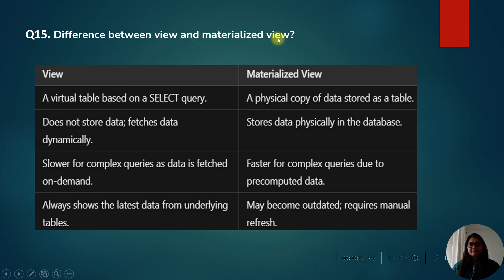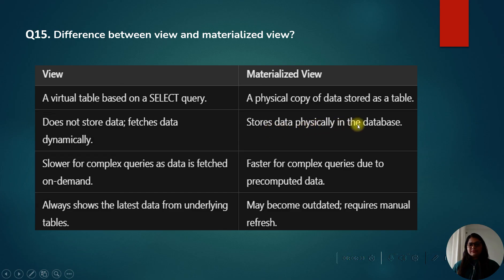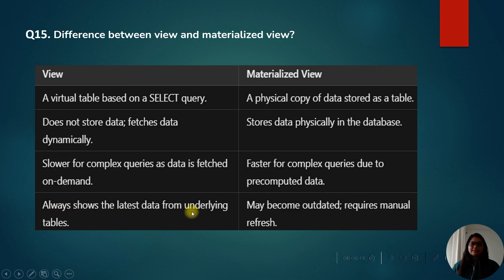Next question: difference between view and materialized view. A view is a virtual table based on a SELECT query, while a materialized view is a physical copy of data stored as a table. A view does not store data and fetches it dynamically, but a materialized view stores data physically in the database. Views can be slower for complex queries since data is fetched on demand, but materialized views are faster due to pre-computed data. Views always show the latest data from underlying tables, but materialized views can become outdated and may require a manual refresh.